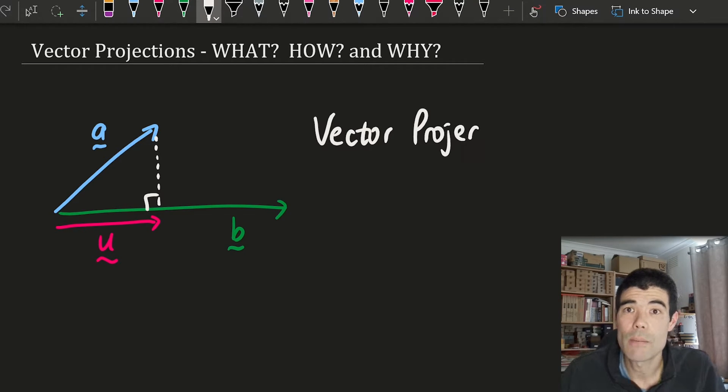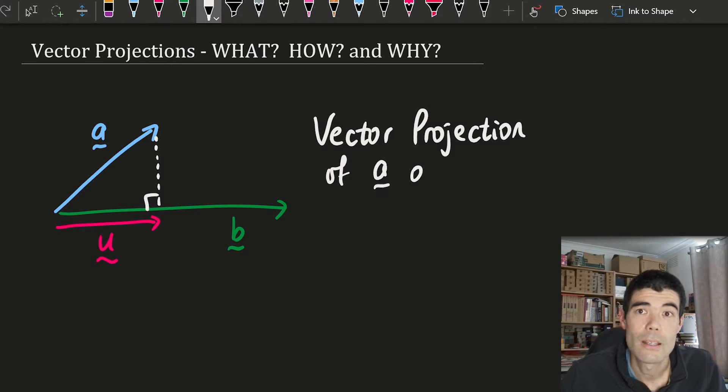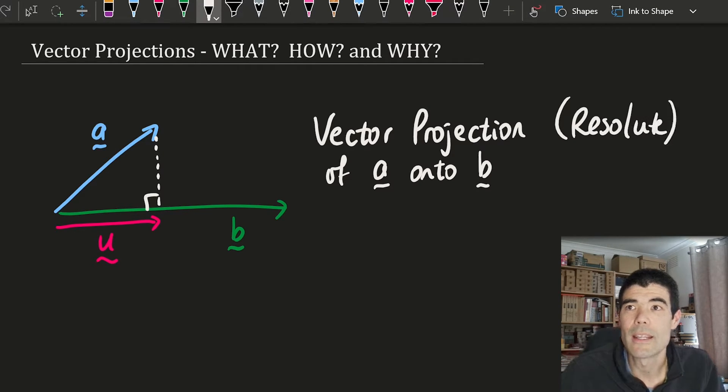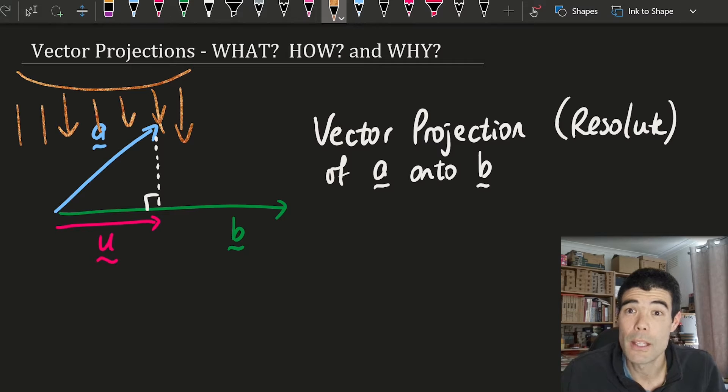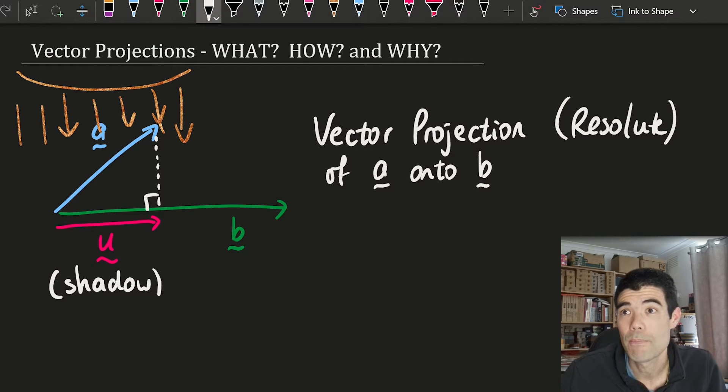That is the vector projection of a onto b. We can also call it a vector resolute. One way to understand it is think about the sun shining directly down onto b, which is like the flat ground. If we think about the length of the shadow on the ground that will be projected by the sun, that's the idea with the vector resolute.